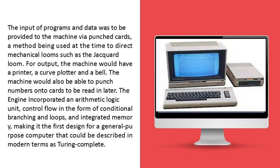The input of programs and data was to be provided to the machine by punched cards, a method being used at the time to direct mechanical looms such as the Jacquard loom. For output, the machine would have a printer, a curve plotter, and a bell. The machine would also be able to punch numbers onto cards to be read in later. The engine incorporated an arithmetic logic unit, control flow in the form of conditional branching and loops, and integrated memory, making it the first design for a general purpose computer that could be described in modern terms as Turing complete.